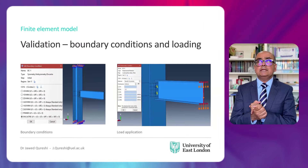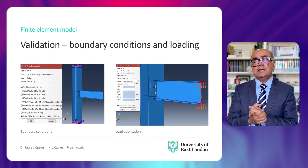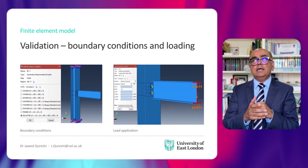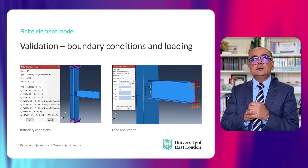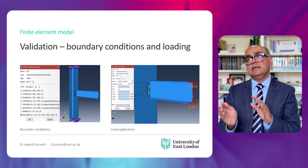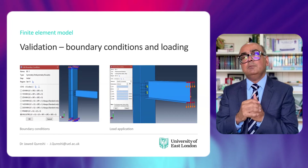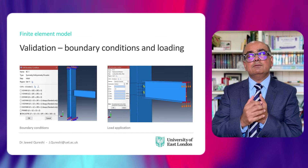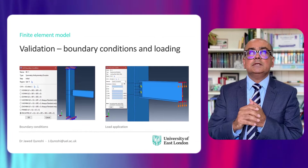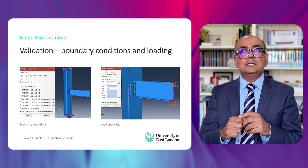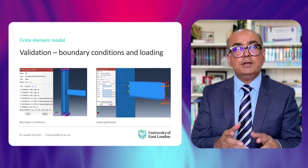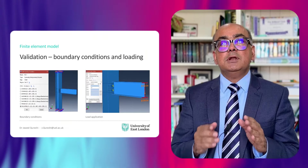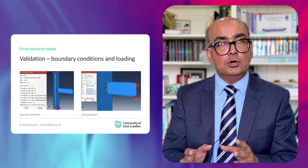Regarding boundary conditions and load application: the column is fixed at both ends. The beam is loaded at the end by applying a deflection and then measuring the reaction. Bolt torque is applied to bring the connecting surfaces together — since we didn't have much information from the experiment, we applied bolt torque just to bring the contacting surfaces close to each other. General contact is used to define contact interactions.